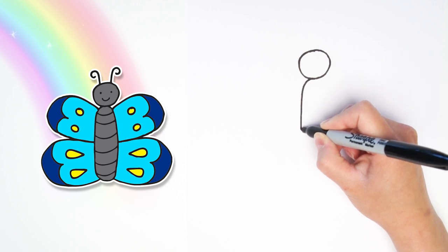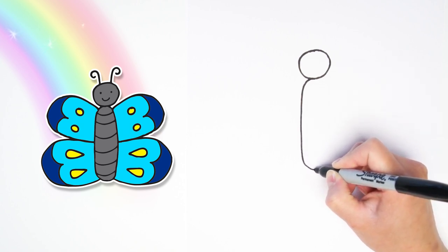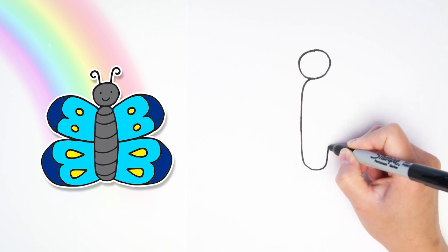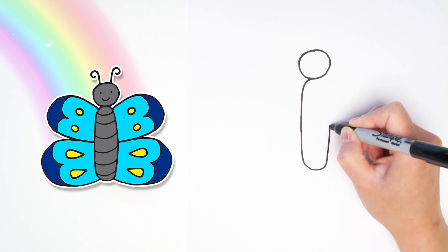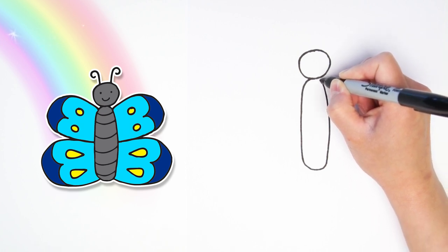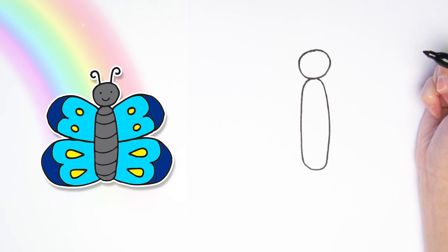Just draw it straight down, curve around and go back up making a long skinny oval shape kind of like a hot dog shape. And there we have the body for the butterfly.